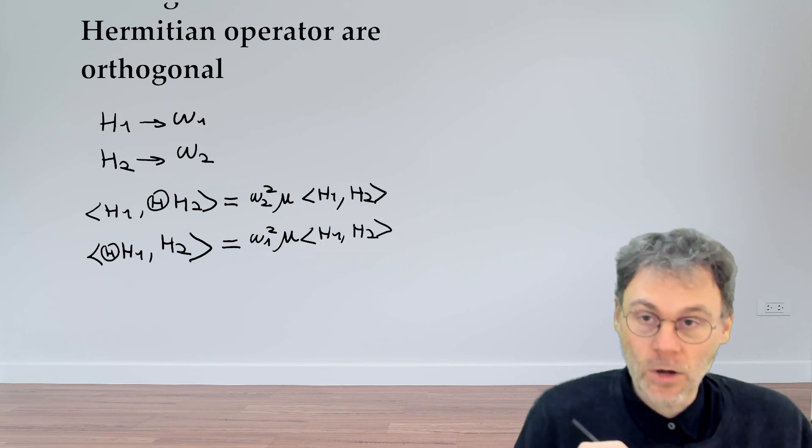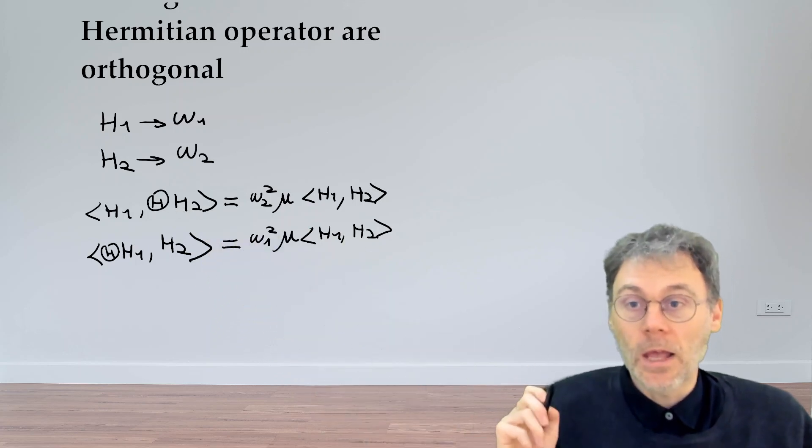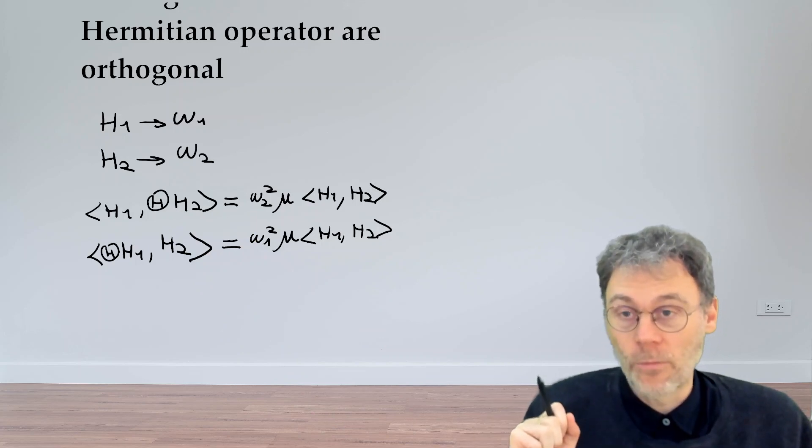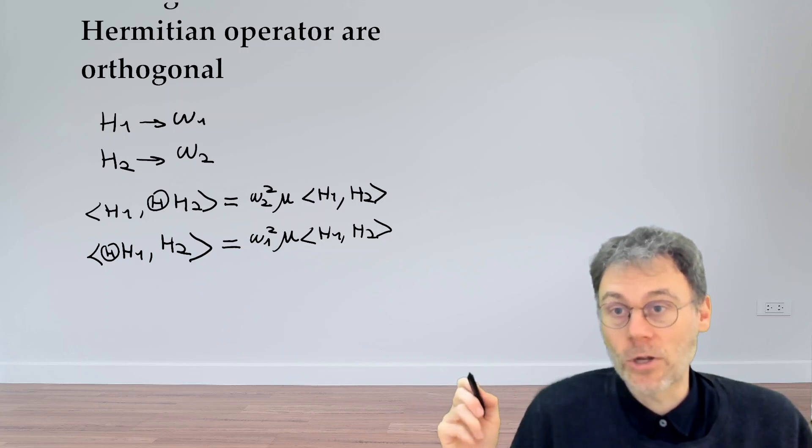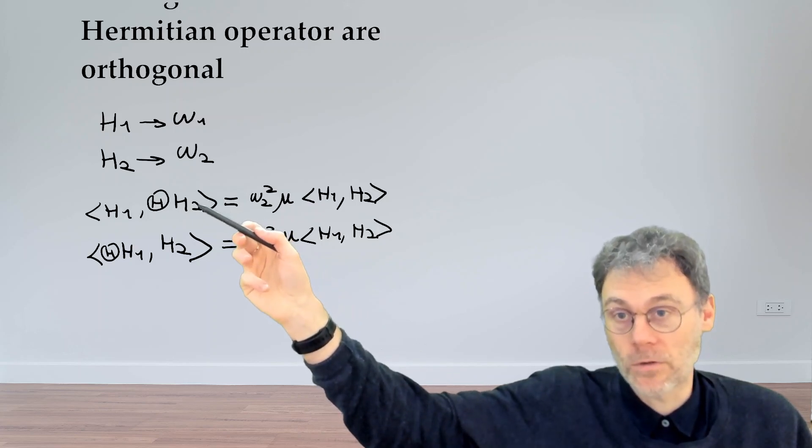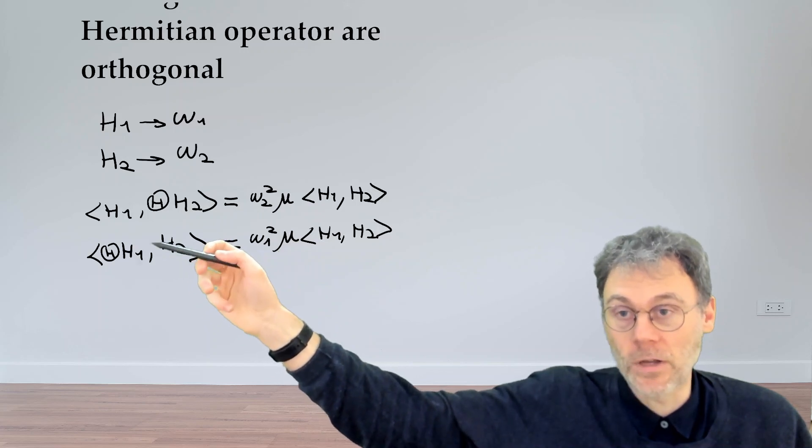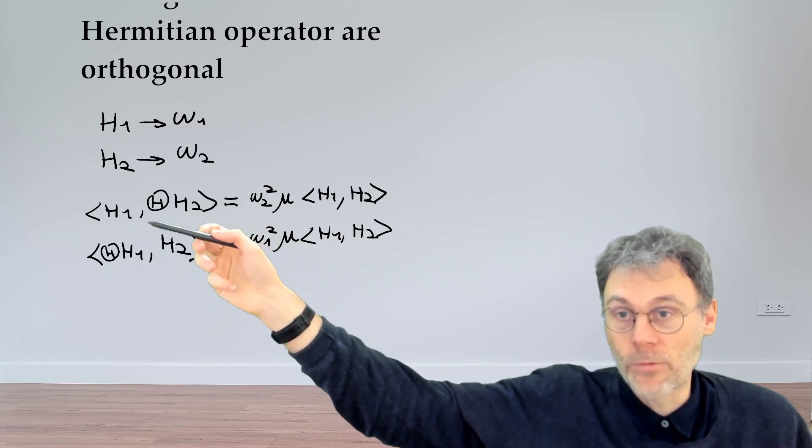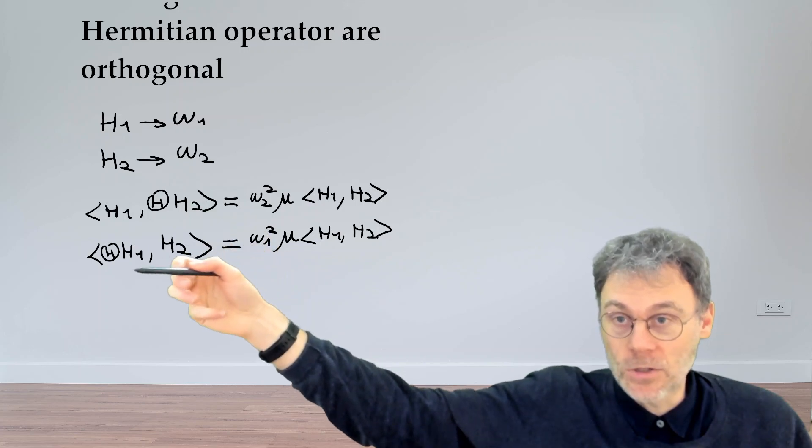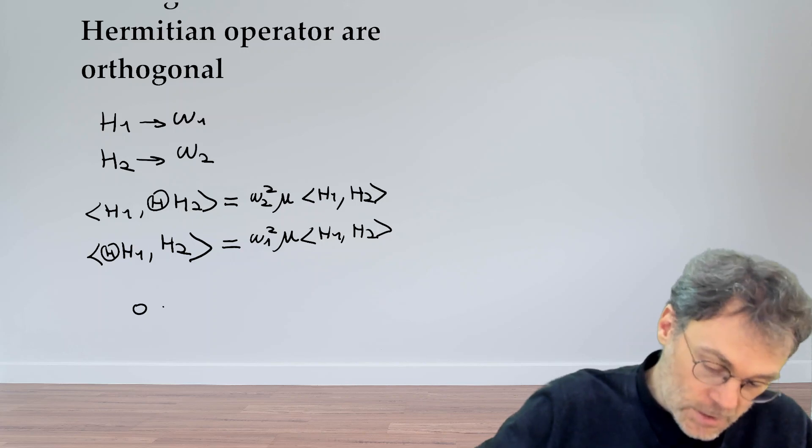So let's now subtract these two equations. Let's first have a look at these two left-hand sides here. Important is, of course, that we're dealing with a Hermitian operator. The definition of a Hermitian operator is that it doesn't really matter whether we operate with our operator first on the second factor or first on the first factor. So because we have a Hermitian operator, these two left-hand sides are actually the same. So if we subtract them, we end up with zero.